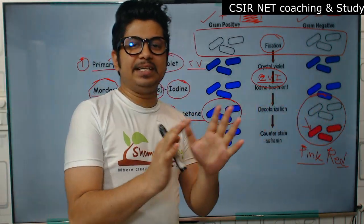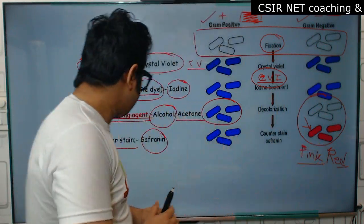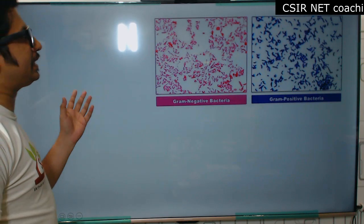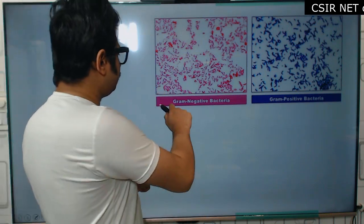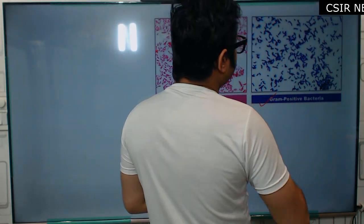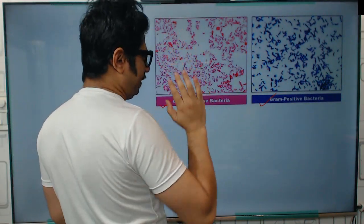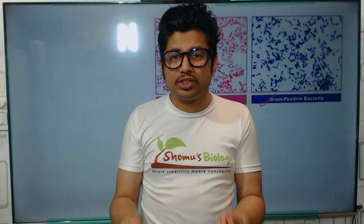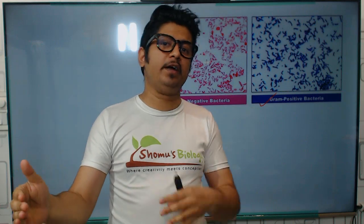At the end, we can easily differentiate: the blue or violet ones are gram positive, and the red or pink ones are gram negative. Under the microscope you can see this clearly — gram positive bacteria appear blue, gram negative bacteria appear red. In broad terms: blue means gram positive, red means gram negative. This is what you see under the microscope when you use gram staining.